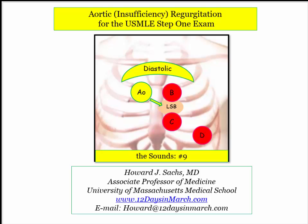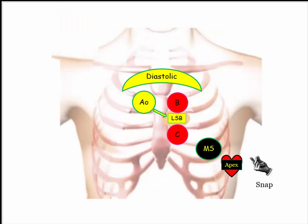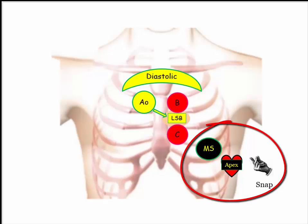Welcome back to 12 Days in March. In this ninth video on heart sounds, we'll wrap up our discussion of the aortic valve focusing on aortic regurgitation, which is also referred to as aortic insufficiency. These terms are used interchangeably. Aortic regurgitation is one of two key diastolic murmurs you need to be familiar with, the other being mitral stenosis, which is characterized by an opening snap at the apex.